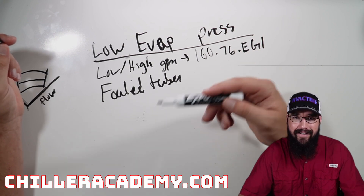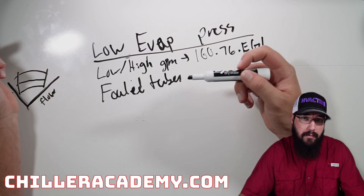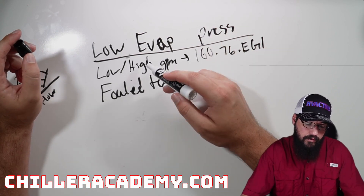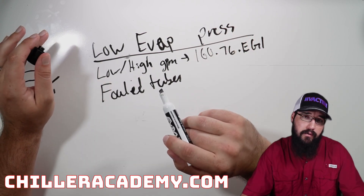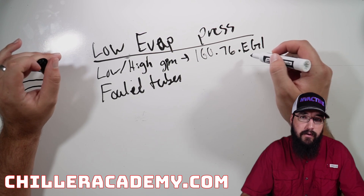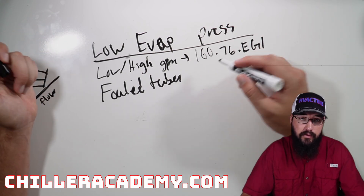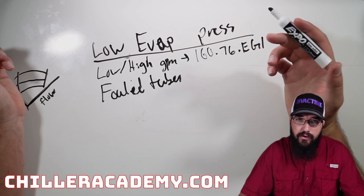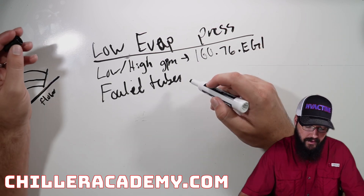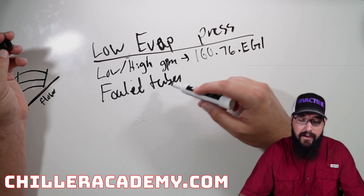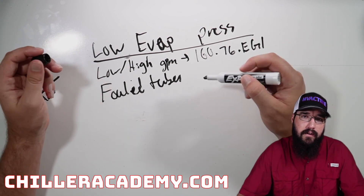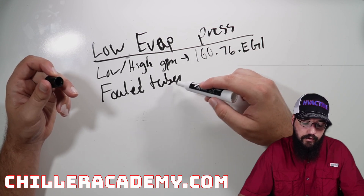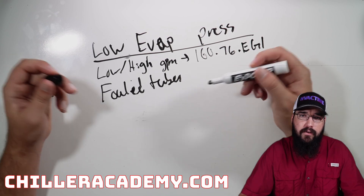Too much water through the evaporator pushes us into laminar flow because of the force and velocity behind it. Because the evaporator is typically a closed loop, it doesn't get opened as often, but fouled tubes still have to be considered. A high approach value can help you determine that — if you know you've got good GPM but are still having approach issues, you really want to consider possible fouled tubing.